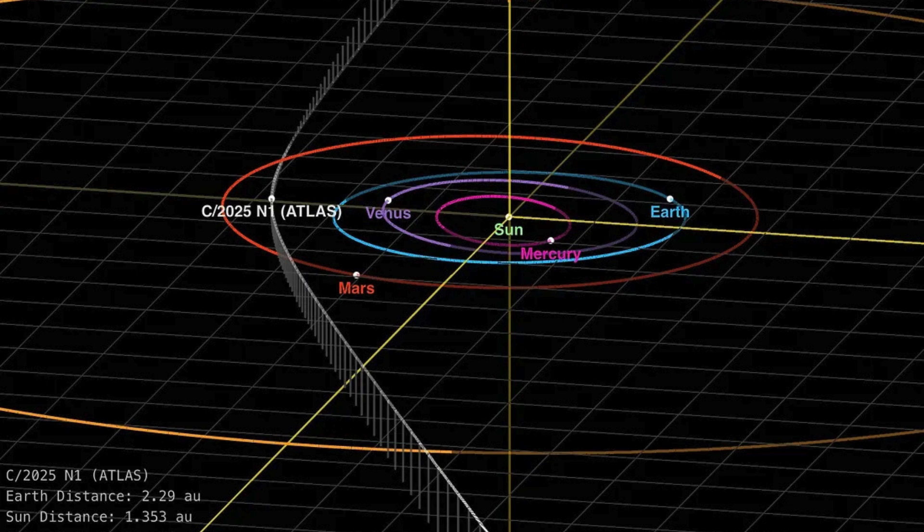Welcome back to the Deep Dive. Today we're digging into something, well, something that's really quite strange. We've got an object out in space that seems to be bending the rules, ignoring gravity almost. We're talking about 3I Atlas.